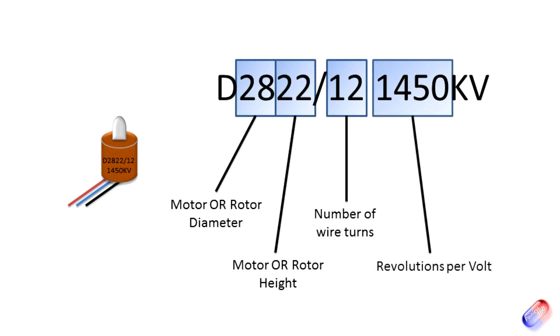And the last number is the revolutions per volt. Now what that means is that for every volt that's applied to the motor in a no-load condition, that's how quickly it would turn. So in this example, the motor would turn 1450 revolutions every volt, or if you put 10 volts onto this motor, you'd get 10 times that, which would be 14,500 revolutions per minute. So those are the numbers, that's how it actually works.